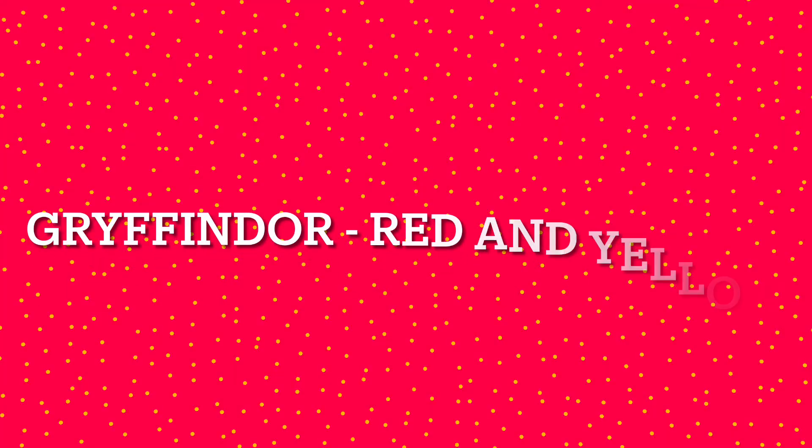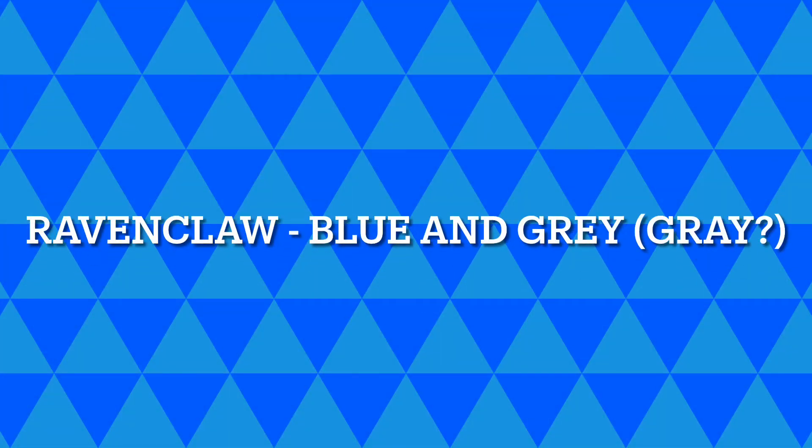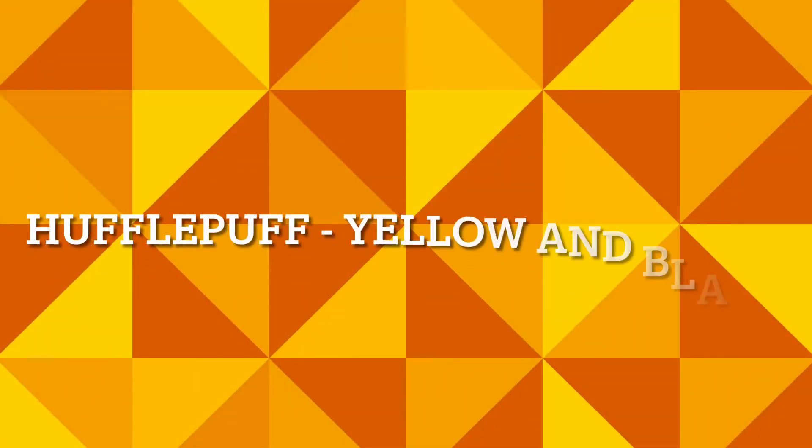It's really nice and cute. I really like it. This is also just the colors for the houses if you didn't know. Gryffindor is red and yellow, Ravenclaw, as you saw me do it, is blue and grey—I'm not too sure how to spell that but it doesn't matter. And then we also have Hufflepuff, which is yellow and black.